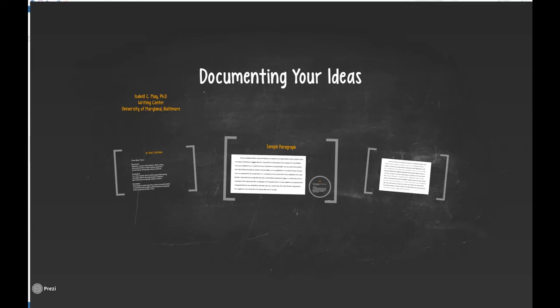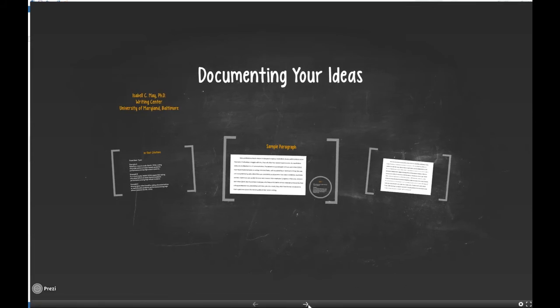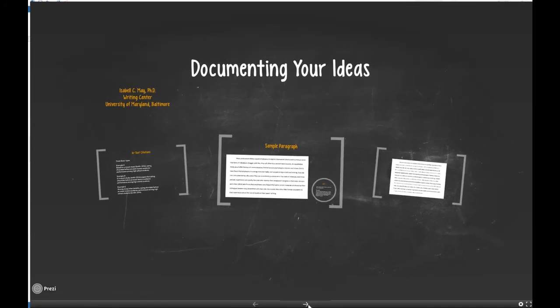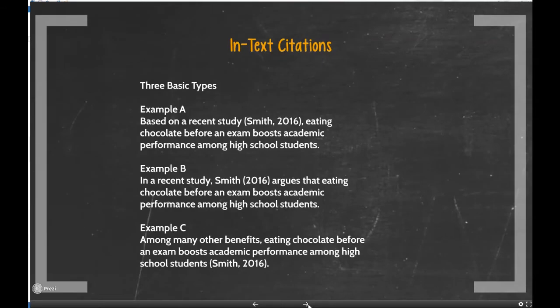So let's look at some examples together on how to document your ideas. There are basically three ways — three basic types of in-text citations — which are really the core of documenting your ideas for the bulk of your paper.